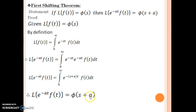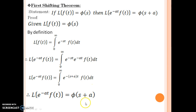In short, what this is telling you is that whenever you multiply the function by e to the power minus at, your original Laplace has this effect: s is replaced by s plus a. This is the first shifting theorem, and it is a very short proof but a very important one.